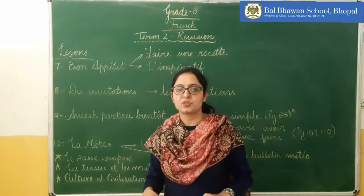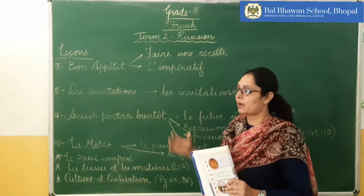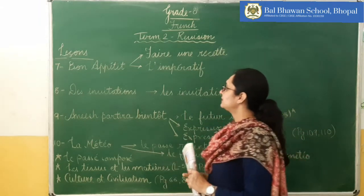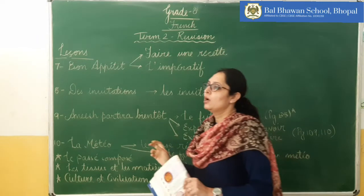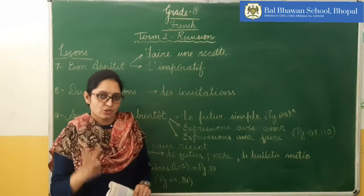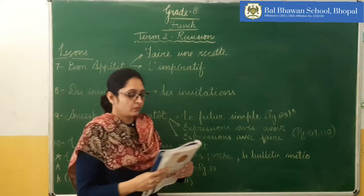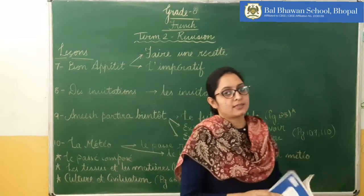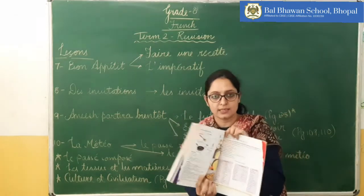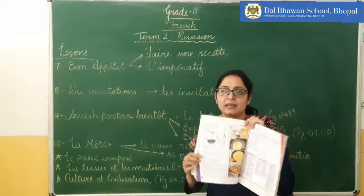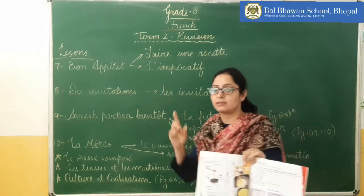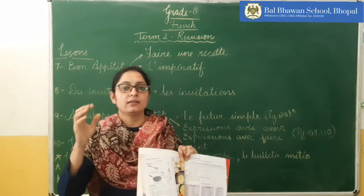The first chapter is Bon Appétit, which is chapter number seven. In this chapter, the first thing you have done is 'faire une recette' — that means you have learned how to write a recipe in French. You have to do this once again because a recipe question will be coming. You can refer to page number 70, where the recipe related to crêpes (pancakes) is given.